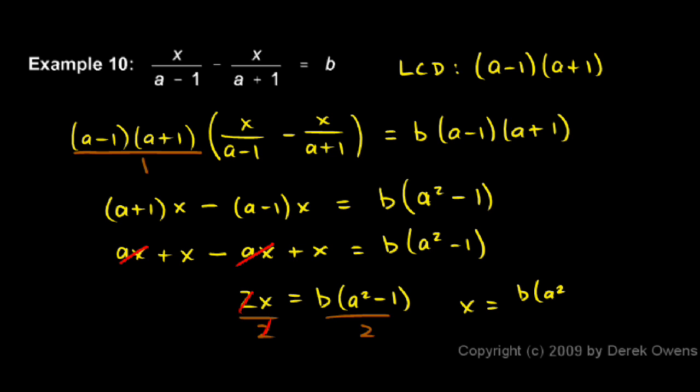I don't have a numerical answer for x, and that's okay. My original equation had x, a, and b in it, so when I solve for x, it makes sense that I have x in terms of a and b.